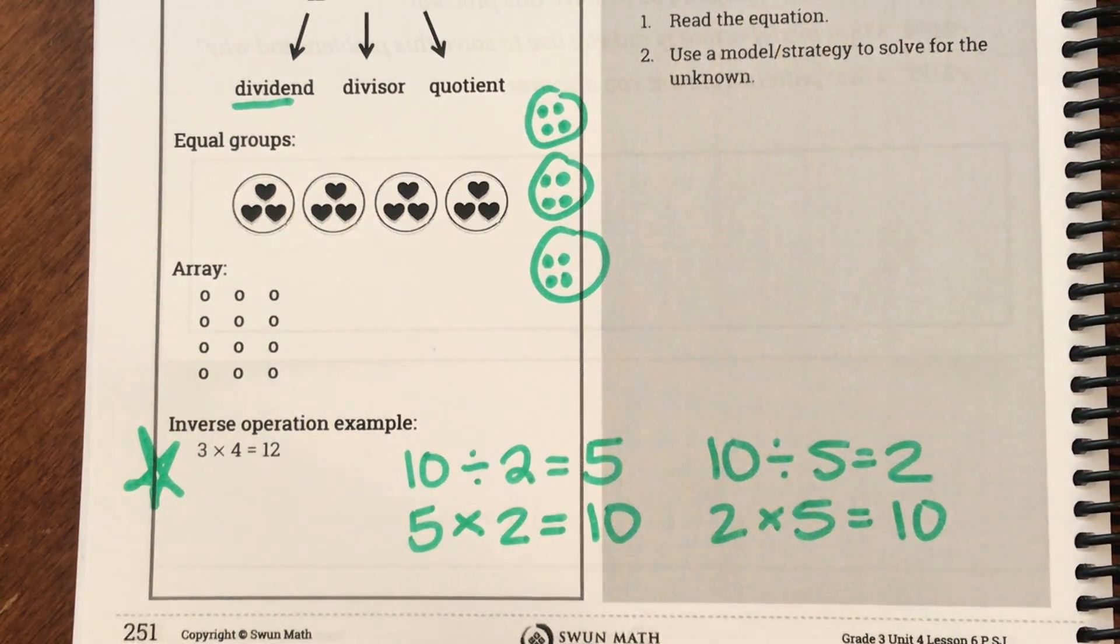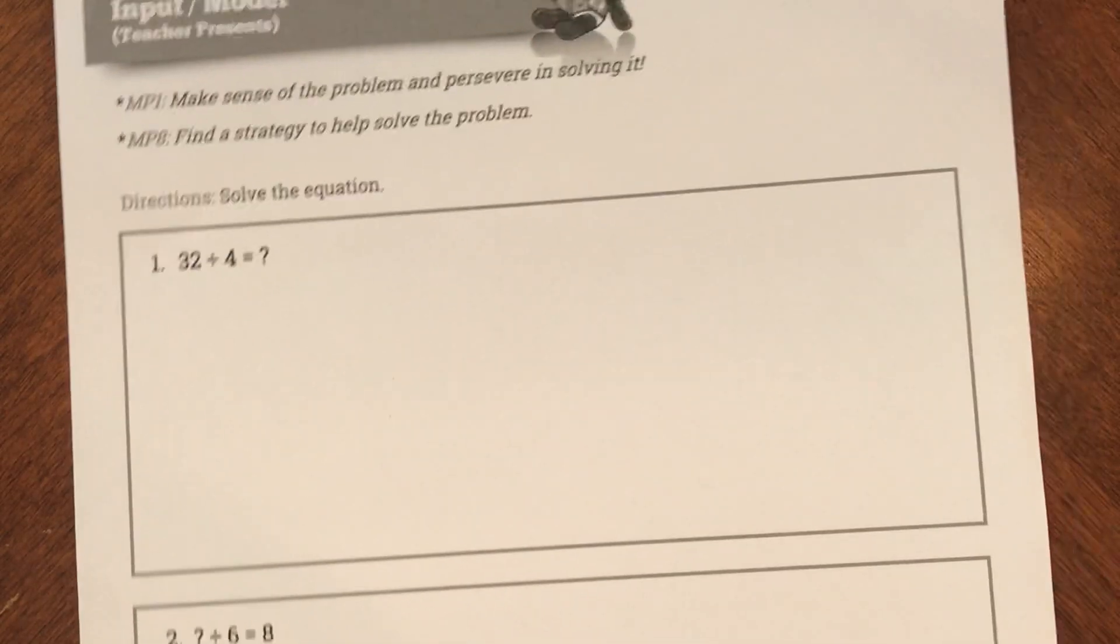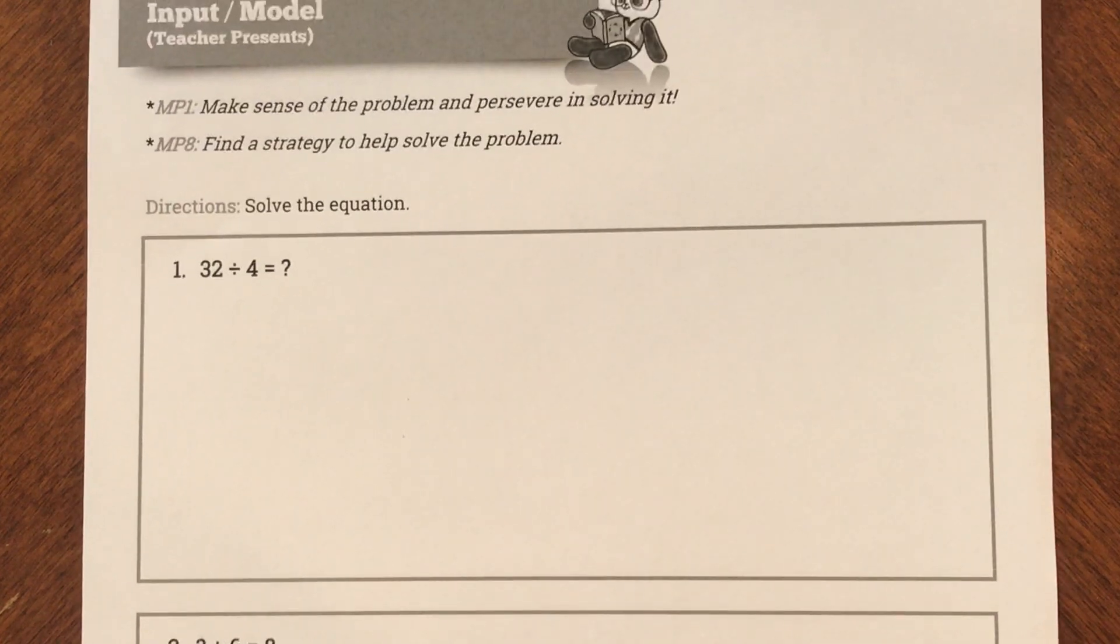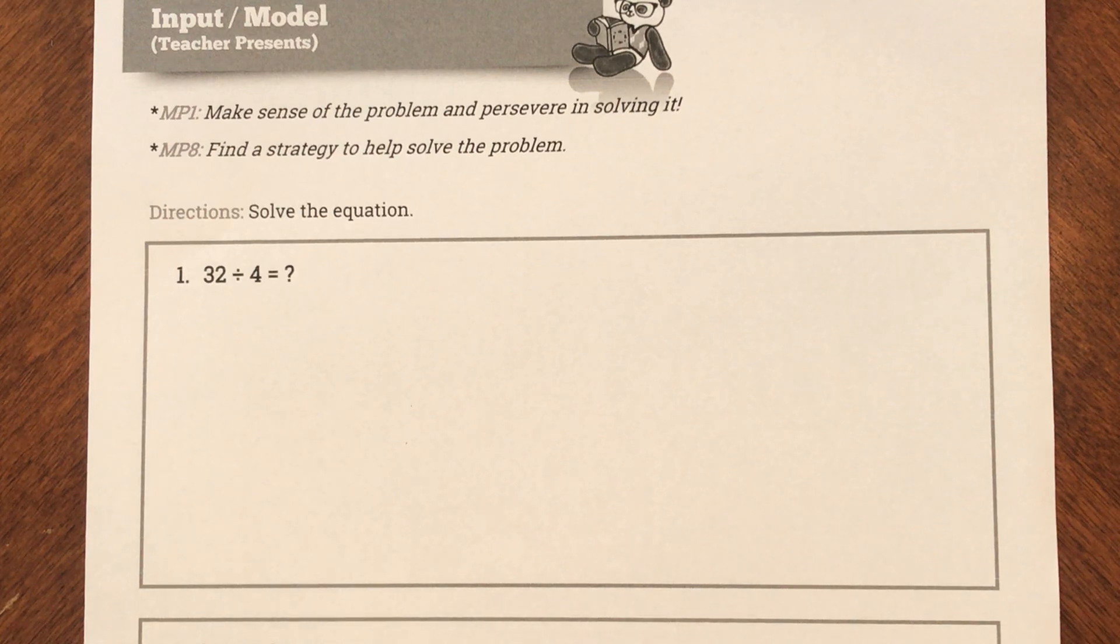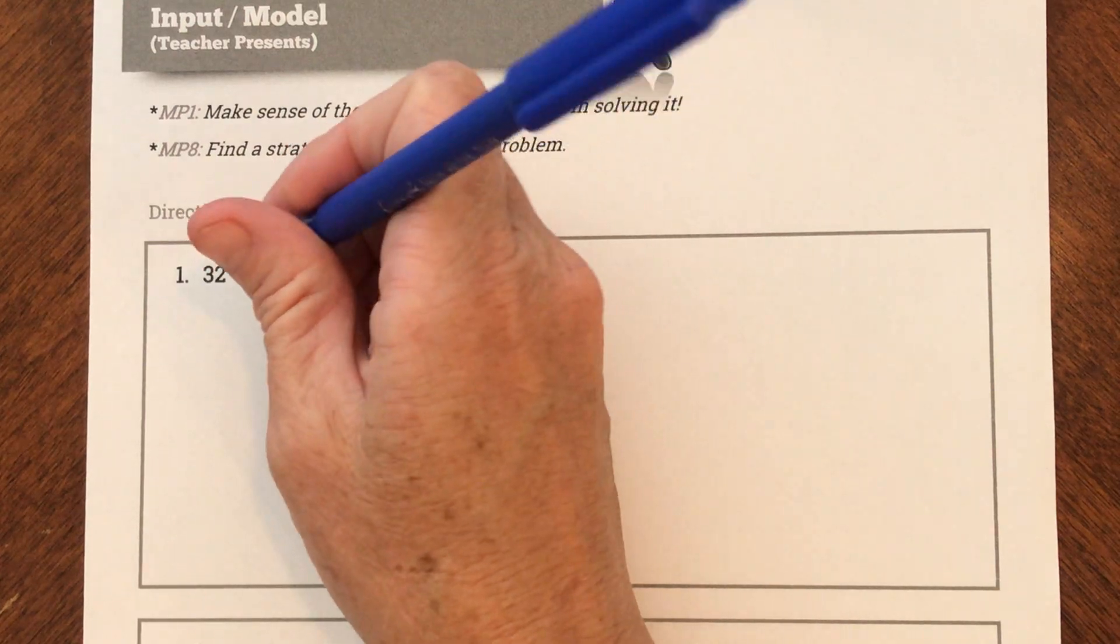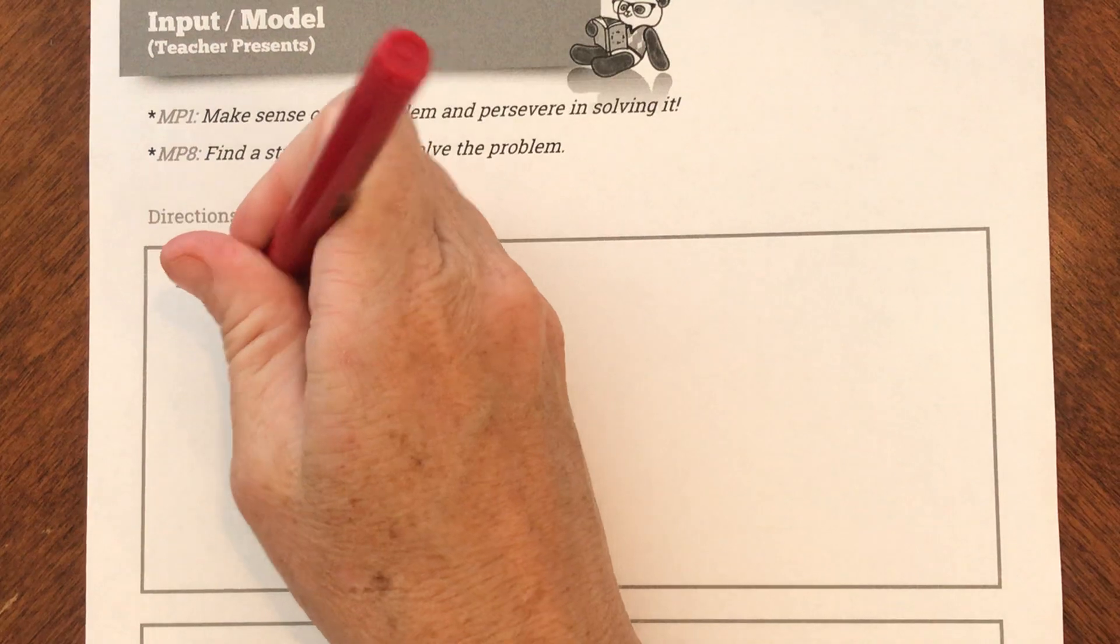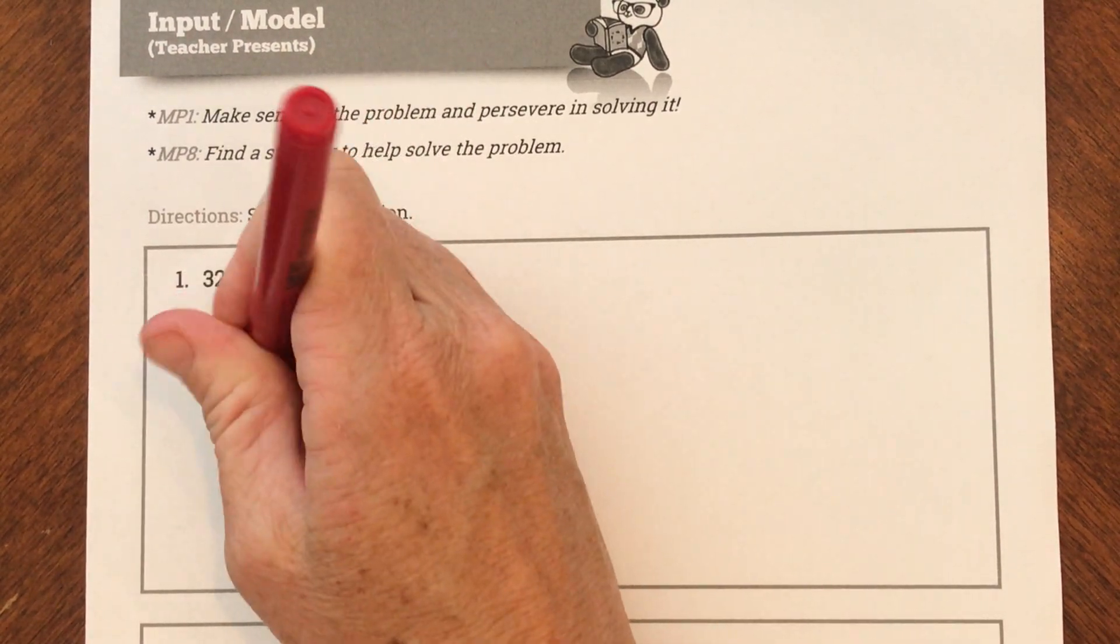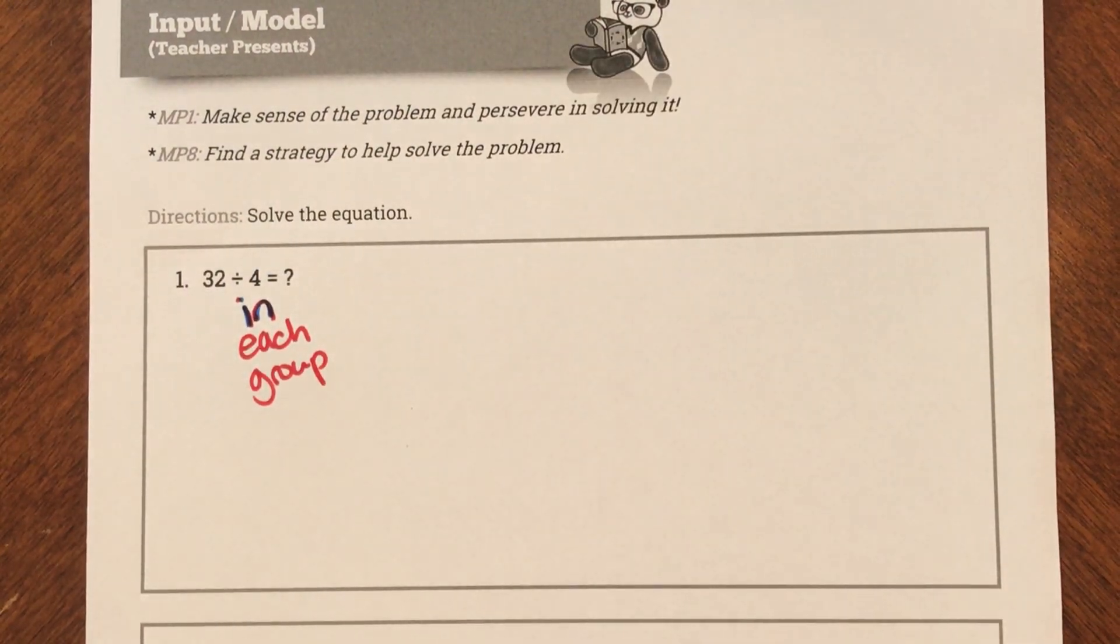So I'm going to get started on mine, and today we're just going to be using all these strategies to solve our problems. So here's my first problem. My first problem says 32 divided by four equals question mark. So they just need me to solve this. What could I use to solve this? Well, I'm going to say if I have 32, and I'm going to put four in each group. How many groups?